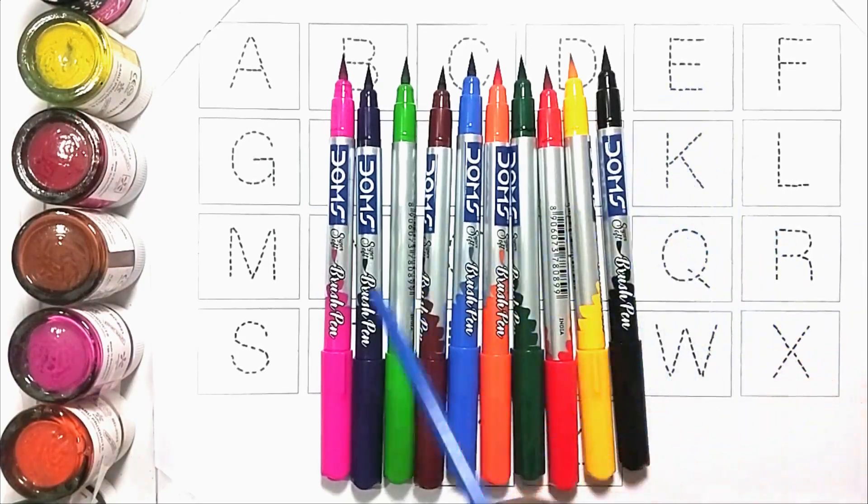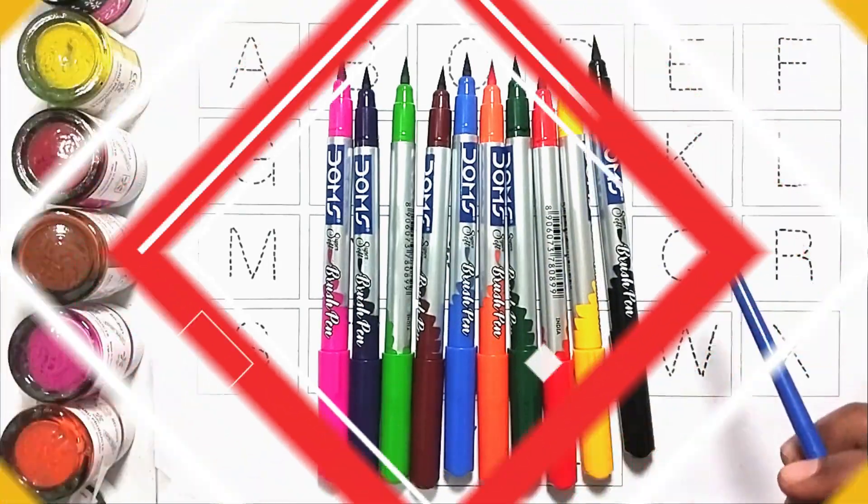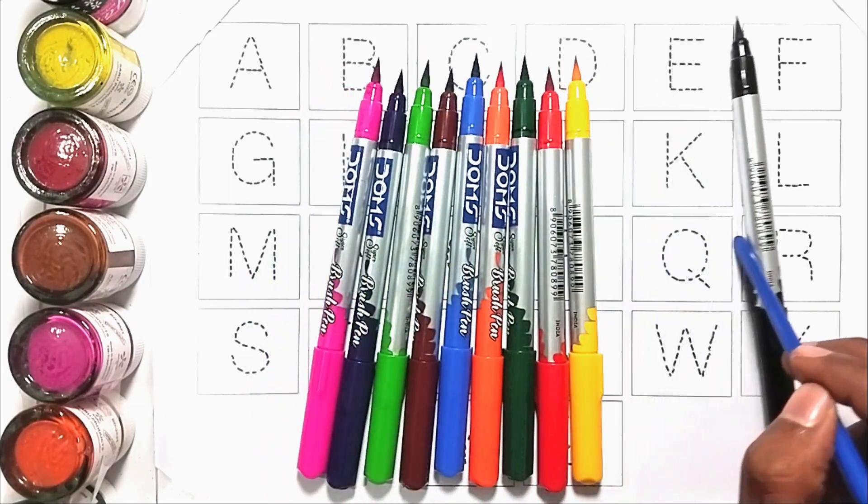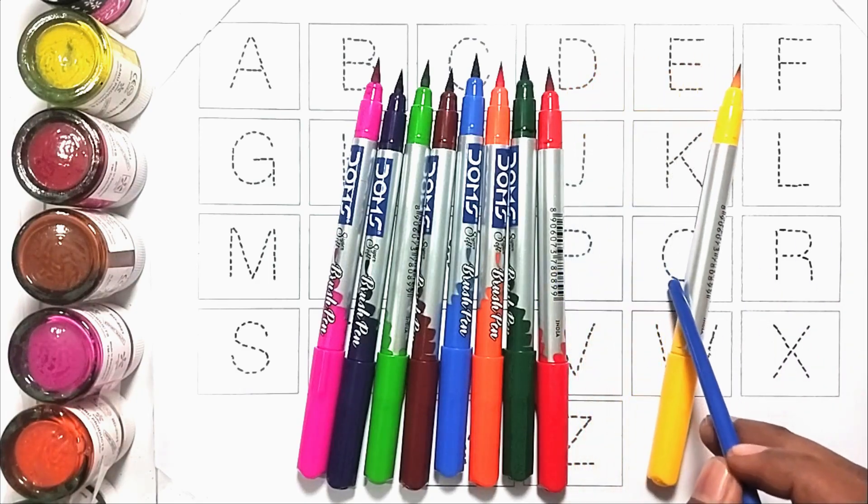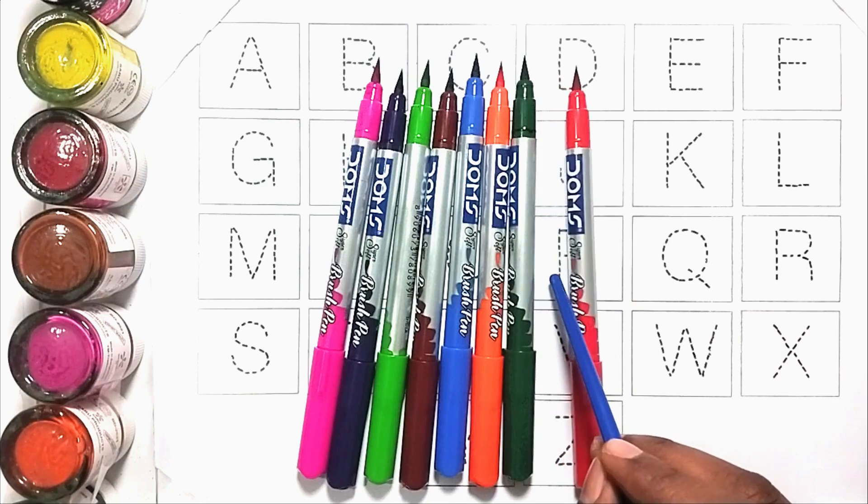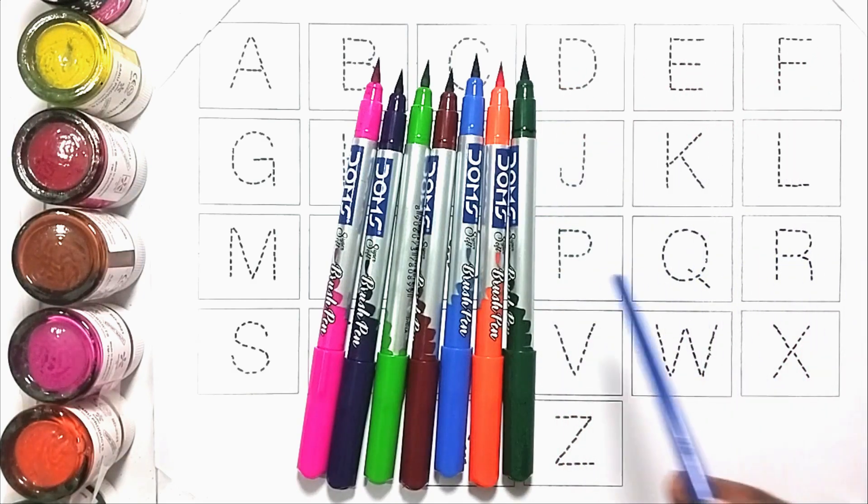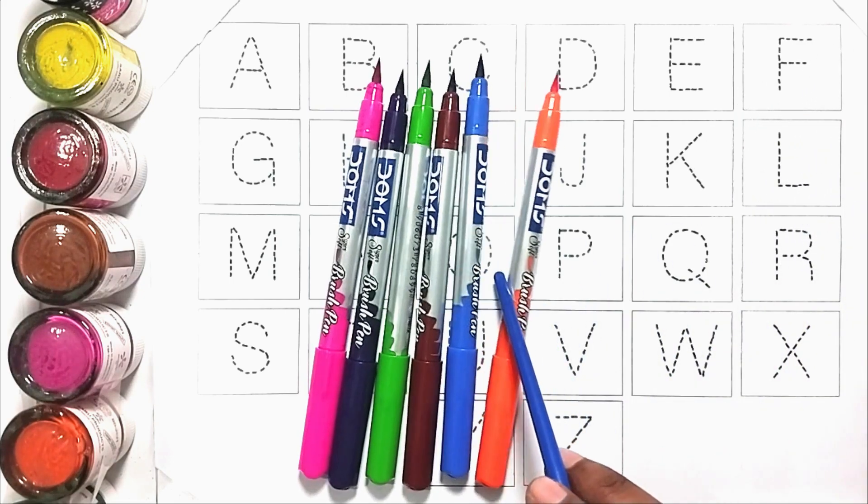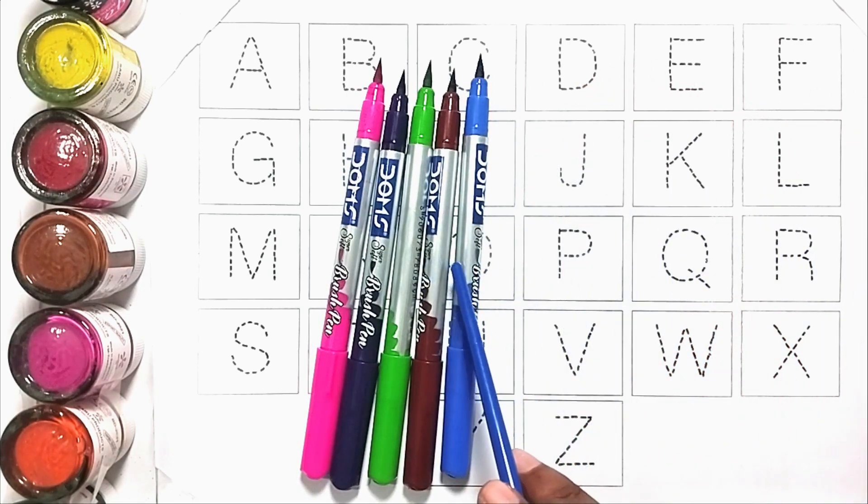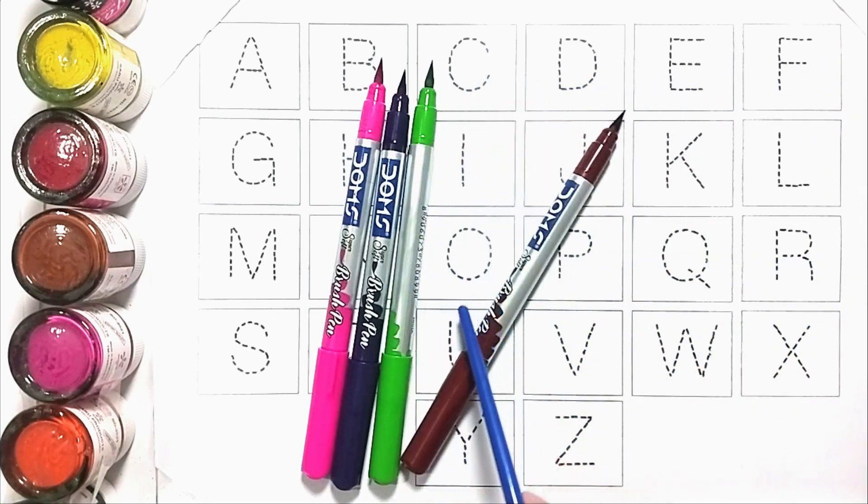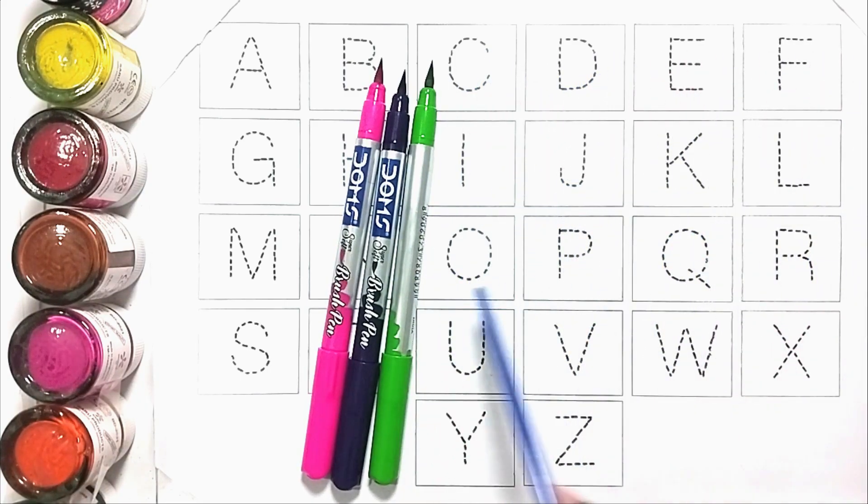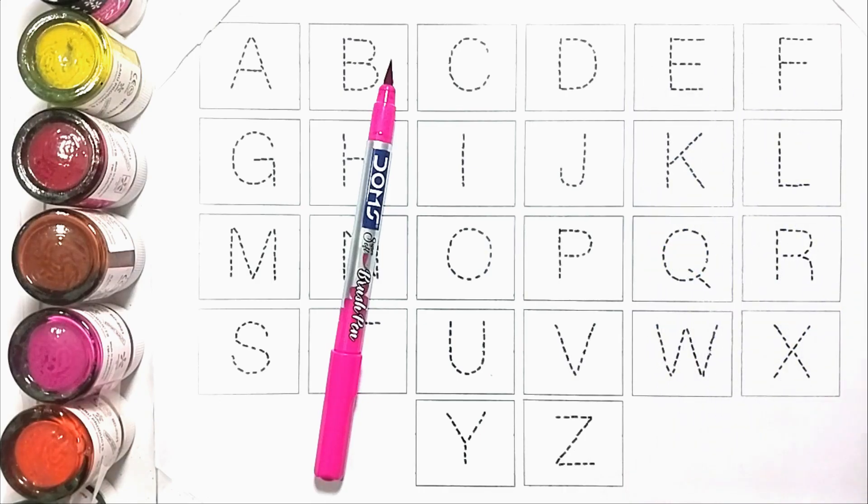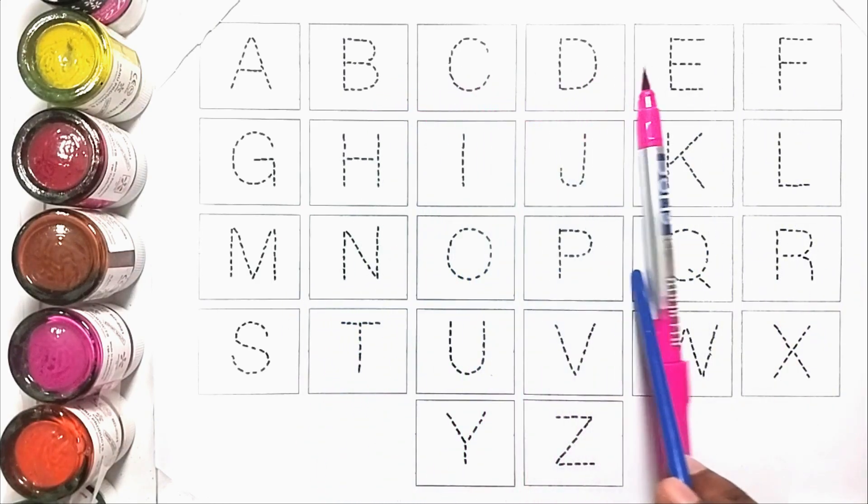Kids, today we will learn ABC. This is our colors: black color, yellow color, red color, green color, orange color, blue color, brown color, light green color, purple color, pink color.